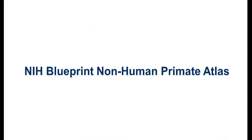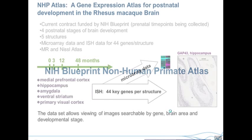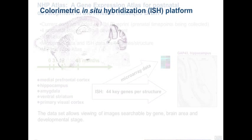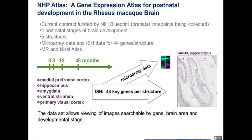Now I want to talk about the NIH Blueprint Non-Human Primate Atlas. This is a contract with NIH — a gene expression atlas for postnatal development in the rhesus macaque, funded by NIH Blueprint. We're currently also looking at prenatal time points. There are four postnatal stages of brain development, and we looked at five different structures: medial prefrontal cortex, hippocampus, amygdala, ventral striatum, and primary visual cortex — with about 45 key genes per structure. We also have microarray data with three replicates at each of the four time points. This dataset is distinct from our human datasets and does not have reference atlases behind it.